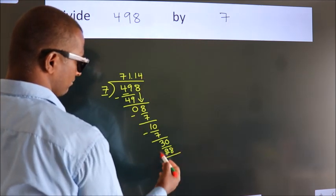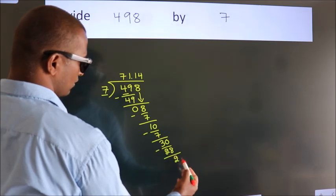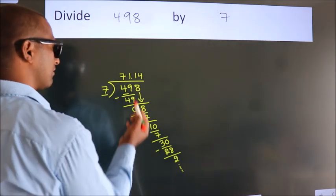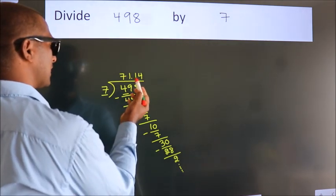Now we subtract. We get 2. And the division continues. It is enough if we do up to 2 decimal places.